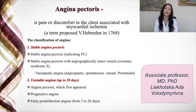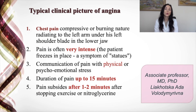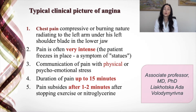What is angina pectoris? It is pain or discomfort in the chest associated with myocardial ischemia. Classification: stable angina pectoris and unstable angina, up to 28 days. The typical clinical picture includes chest pain of a compressive or burning nature, radiating to the left arm, under the left shoulder blade, and to the lower jaw. Pain is often very intense, associated with physical or psycho-emotional stress, lasting up to 15 minutes, and subsides 1-2 minutes after stopping exercise or taking nitroglycerin.